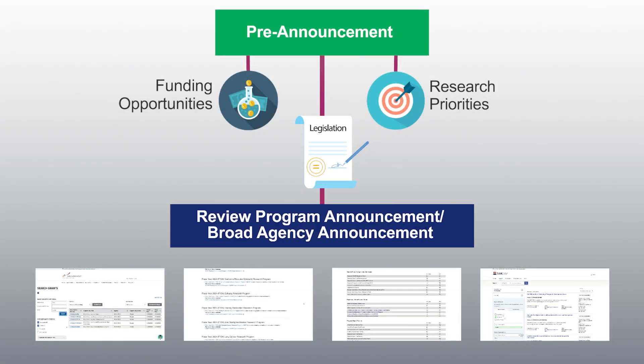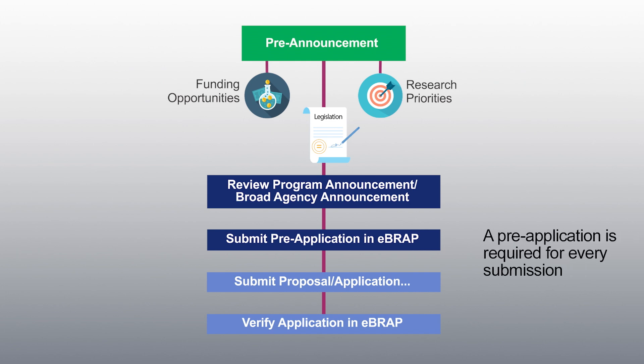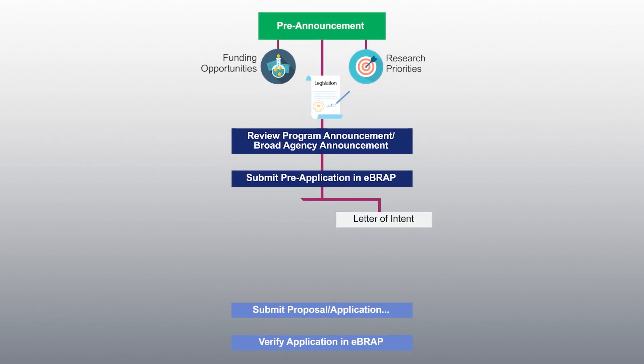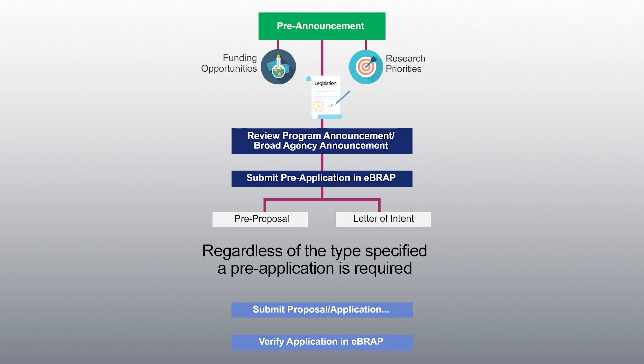Once you identify funding opportunities that interest you, it is important to understand the CDMRP application process. All funding opportunities for CDMRP follow a similar three-step process. First, you need to submit a pre-application through eBRAP. A pre-application is required for every application submission. Each funding opportunity will specify one of two types of pre-application: a letter of intent or pre-proposal. Regardless of the type specified, a pre-application submission is required.